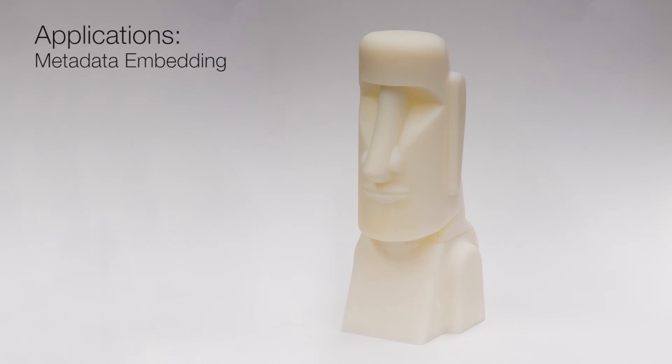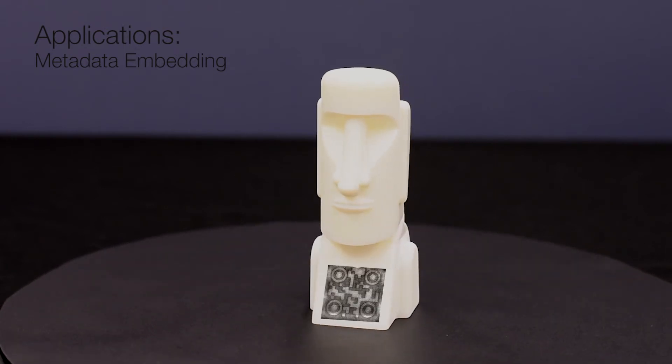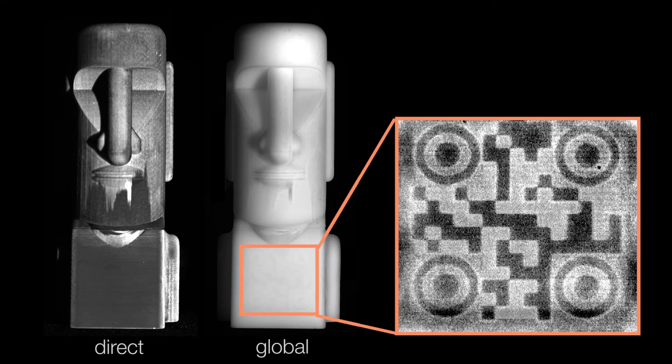More generally, we can embed metadata into customized shapes, very much akin to the metadata stored in photographs such as website links, producer names, and copyright information. In this example, we embed a link to the statue's Wikipedia page.